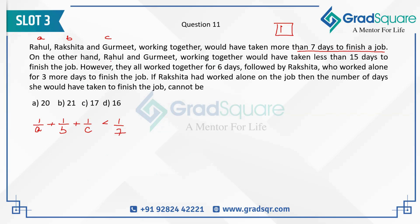On the other hand, Rahul and Gurmeet working together would have taken less than 15 days to finish the job. Since they are taking less than 15 days, 1/A + 1/C must be more than 1/15 — because to finish in exactly 15 days they would need to do 1/15 per day, but since they take less than 15 days, they must work more than 1/15 of the work per day together.